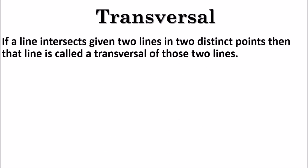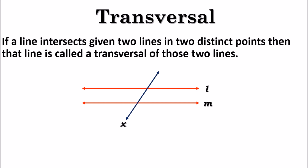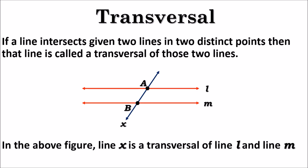What is a transversal? If a line intersects two given lines at two distinct points, then that line is called a transversal of those two lines. Here we have line l and line m, and both lines are intersected by a third line x at points A and B respectively. Therefore line x is a transversal of line l and line m.